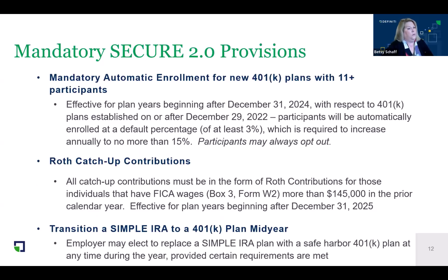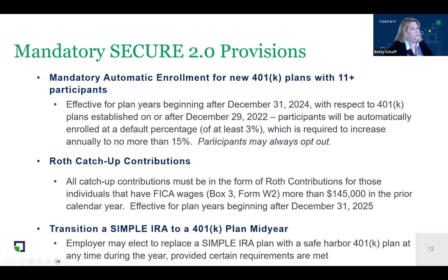There will be a mandatory automatic enrollment requirement for new 401(k) plans with 11 or more participants. Beginning in the 2025 plan year, plans established from the end of 2022 through 2024 that did not include automatic enrollment will need to be amended to add that provision. Automatic enrollment requires a participant to defer at least 3%, increasing annually by at least 1%, capped at 15%, though participants may always opt out. Additionally, for Roth catch-up contributions, employees making over $145,000 in FICA wages in the prior year must make catch-up contributions on a Roth basis.